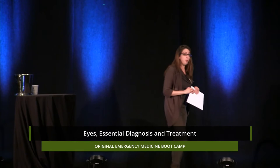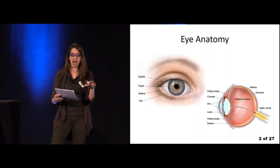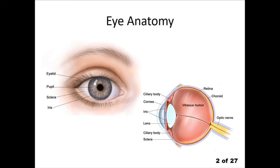Looking over here, you can see that the outer wall of the eye is made up of the sclera — the whites of your eye — and the cornea, which is the transparent layer that lies over the iris and the pupil. The junction of these two areas is called the limbus, which will come up a little bit later.